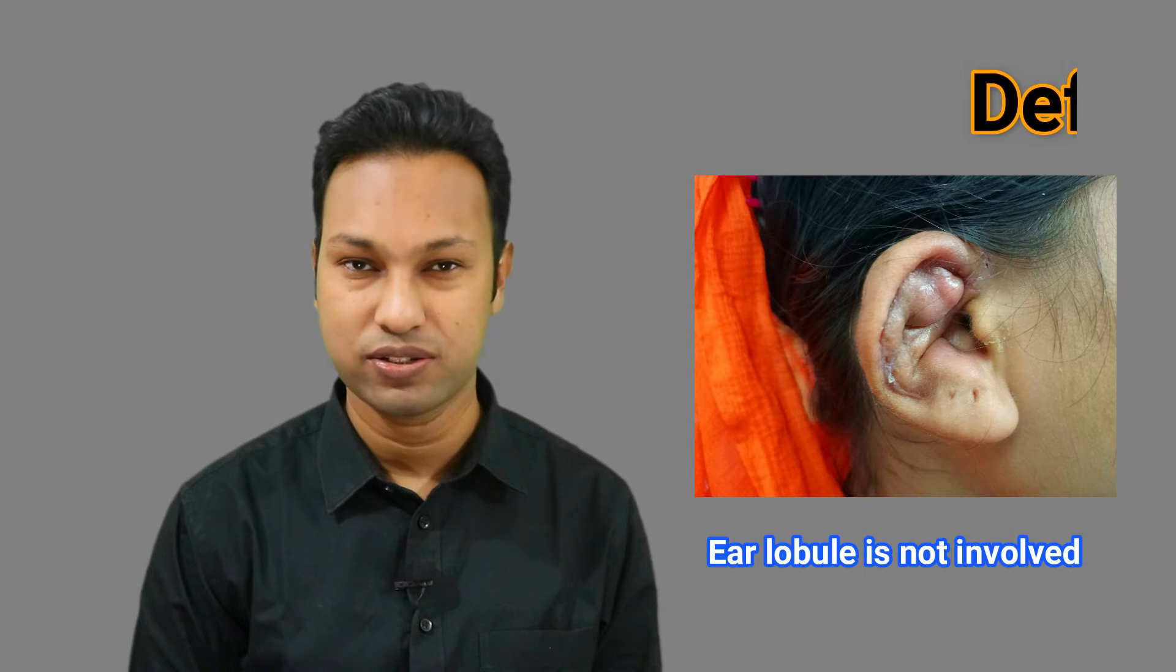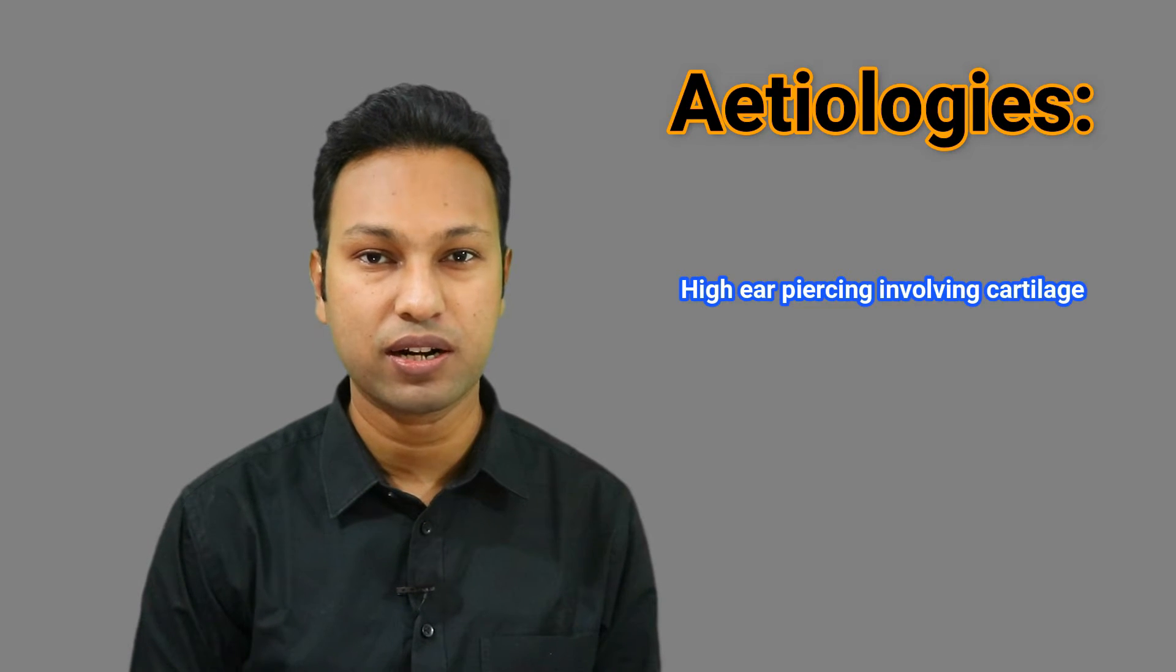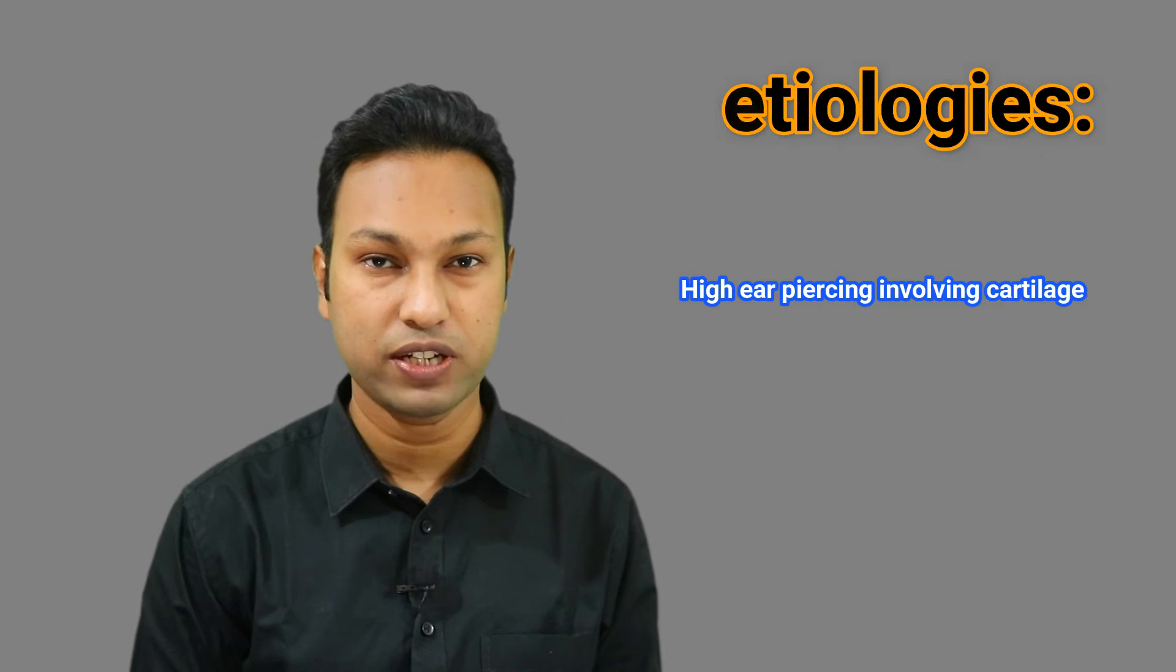Why does this perichondritis of pinna happen? It occurs mostly after trauma to the cartilaginous portion of the pinna, which results from laceration of the ear, surgery of the external ear, frostbite, chemical burns, high piercing of the cartilaginous portion of the ear, infection of the hematoma of the pinna, aspiration or incision for drainage of hematoma of pinna.